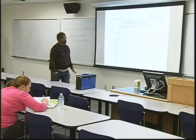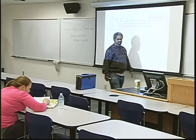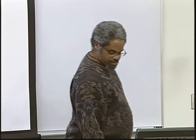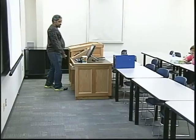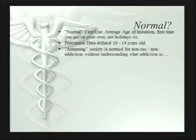Normal is what happens on a regular, predictable basis — and that definition was assuming society was normed for non-use and non-addiction, without understanding what addiction is. These numbers used to be shocking, but we've been living with these conditions for at least a decade, if not two. So, this is part of assessment: you want to know how long this use pattern has been going on and when it crossed the line into addiction from abuse.